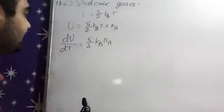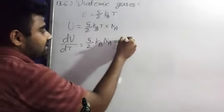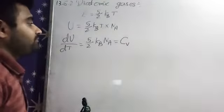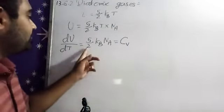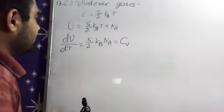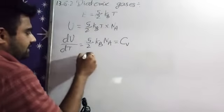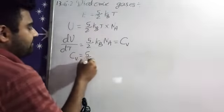So that is dU by dT and that means it is Cv, means specific heat at constant volume. So this is Cv and kB into Na, we can write it as capital R.